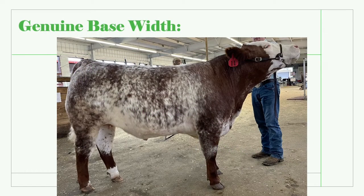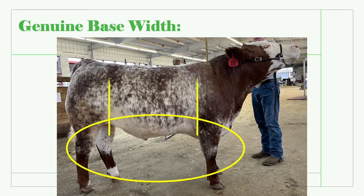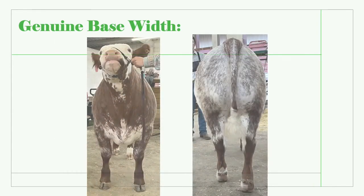True heavy muscled cattle start at the base. The width underneath lays the framework for carrying the mass up high. Evaluate the market cattle from in front of and behind the livestock. Cattle should be wide-based on both ends and carry the same width up through the chest and between the hawks.